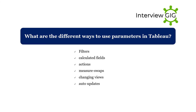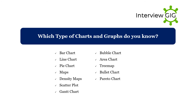What are the different ways to use parameters in Tableau? They can be used in filters, calculated fields, actions, measure swaps, changing views, and auto updates. Which types of charts and graphs do you know? Bar chart, line chart, pie chart, maps, density maps, scatter plot, Gantt chart, bubble chart, area chart, and tree map.